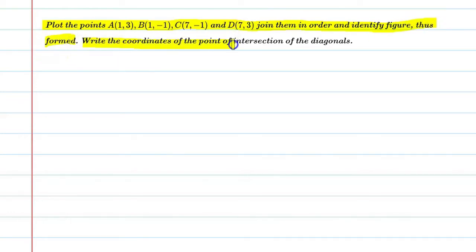Write the coordinates of the point of intersection of the diagonals. So basically, we have these 4 coordinates given on the graph paper and we need to join all these 4 points. After joining the figure, we'll name the figure and also show the points where they intersect.